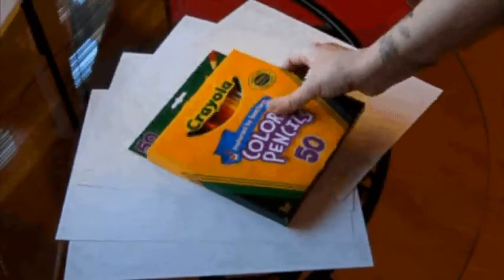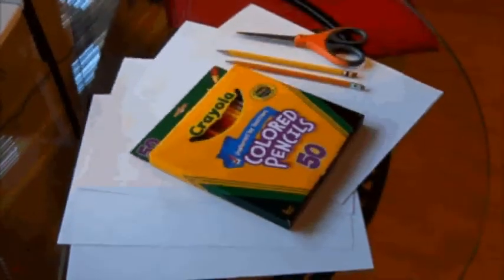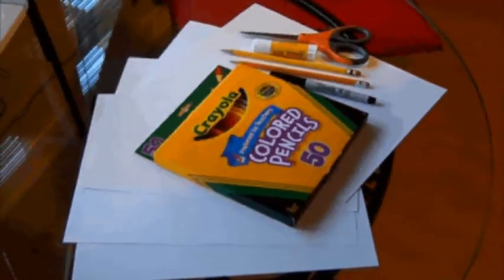The first thing we're going to do is get our materials. We have some white paper, something to color with - we're going to use colored pencils today - something to draw with, pencils, scissors, a black marker for outlining, and glue for gluing.